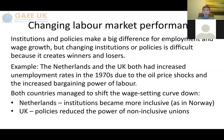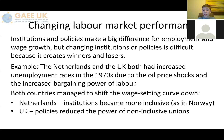On changing labour market performance, institutions and policies make a big difference for employment and wage growth. But changing institutions or policies is difficult because it creates winners and losers. For example, the Netherlands and the UK both had increased unemployment rates in the 1970s due to oil price shocks and the increased bargaining power of labour. However, both countries eventually managed to shift the wage-setting curve down, but they did it in very different ways. In the Netherlands, institutions became more inclusive, as they did in Norway. In the UK, policies were enacted to reduce the power of non-inclusive unions.